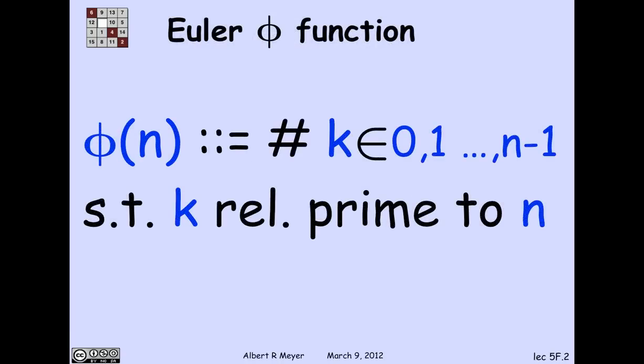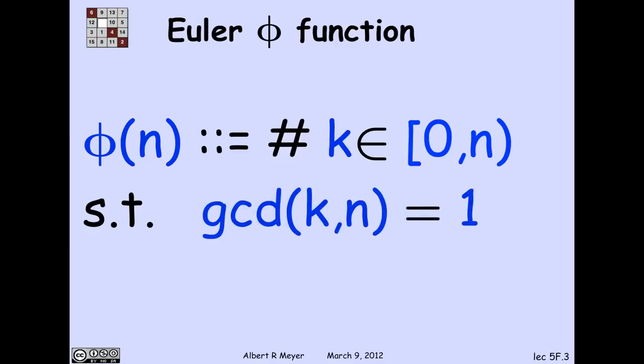So the definition of Euler's function phi, phi of n, is it's the number of integers in the remainder interval from 0 to n minus 1 such that k is relatively prime to n. Remember, there's the notation for the remainder interval that includes 0 and excludes n. And another way to say relatively prime to n is to say the GCD of k and n is 1.